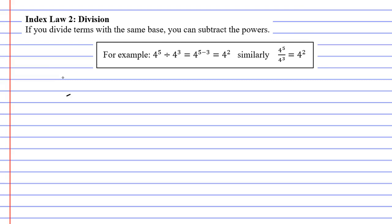So let's make up a question. Let's go with 5 to the power of 4, divide 5 to the power of 2. Now, to see how this works, it helps to write it as a fraction.